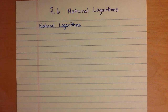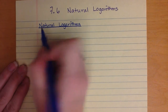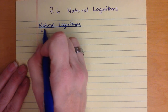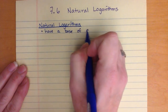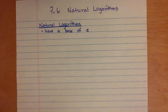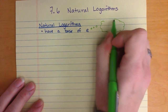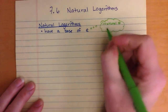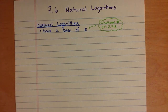The topic for today is natural logarithms. Natural logarithms have all of the same properties of regular logarithms. What's special about them is that natural logarithms have a base of e. We've talked about e before when we talked about exponential functions. Remember that e is an irrational number, and it's approximately 2.718, but it goes on forever and ever, just like pi does.